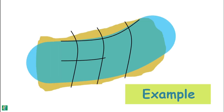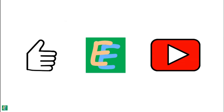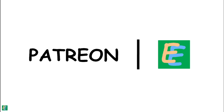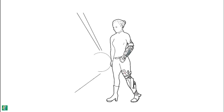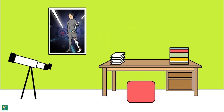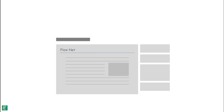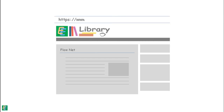Take a look at an example of seepage calculation with flow net on elementaryengineeringlibrary.com. If you like Elementary Engineering videos, you may support it on Patreon. You can also check out the handmade diaries and posters on the store. All the links are in the description. Thank you.